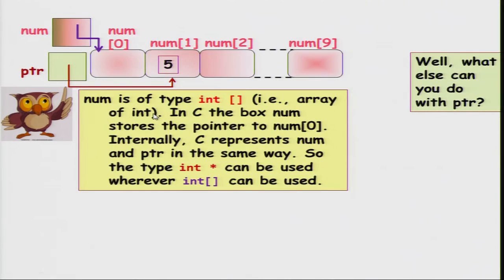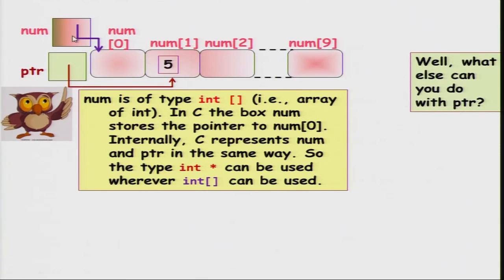Now, what else can you do with a pointer? num is an array of type int[] and in C the box num contains the address of the first location num[0]. Internally, as far as C is concerned, the address of num[0] is just like the address of any other integer location. So the type int* can be interchanged with int[]. You can think of num itself as just a pointer to an integer, which gives you the additional information that the next 10 values are also integers. Internally, an array name num can be treated as a pointer to an integer.